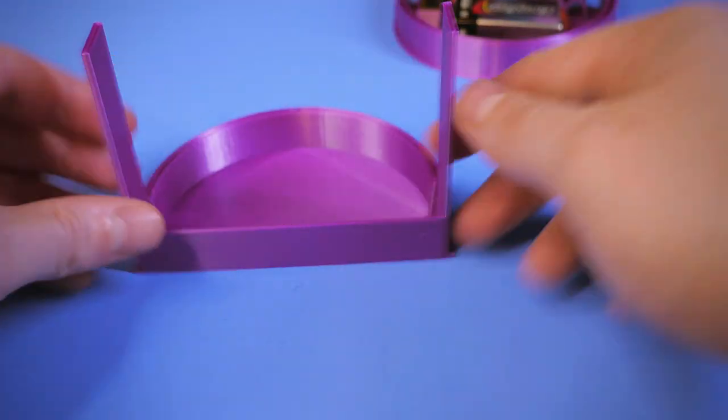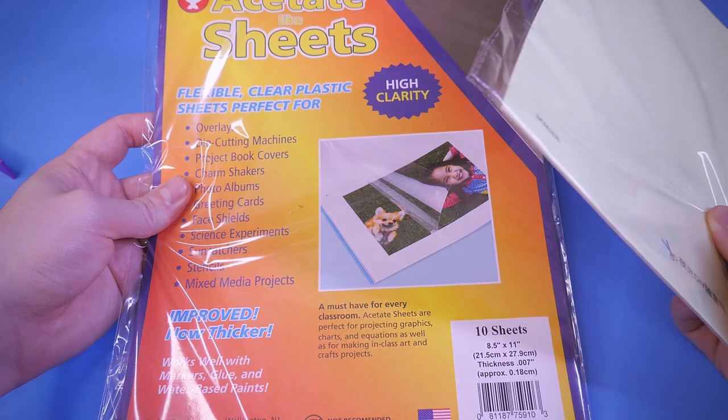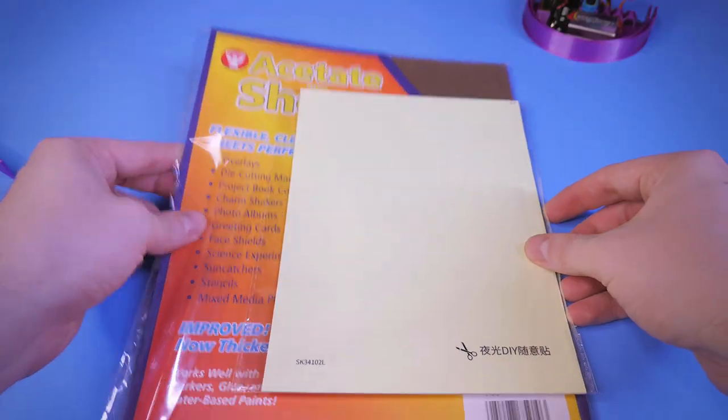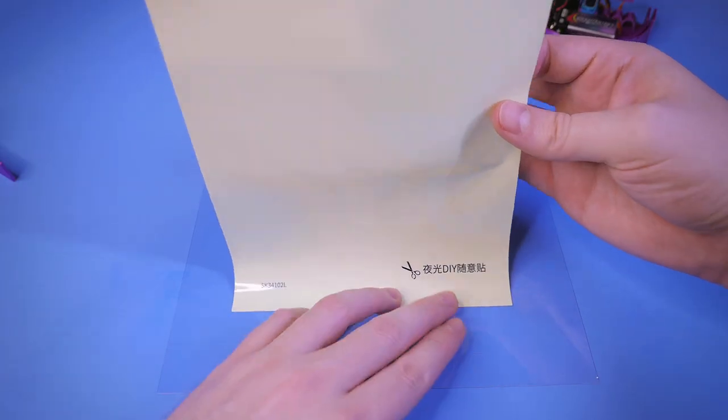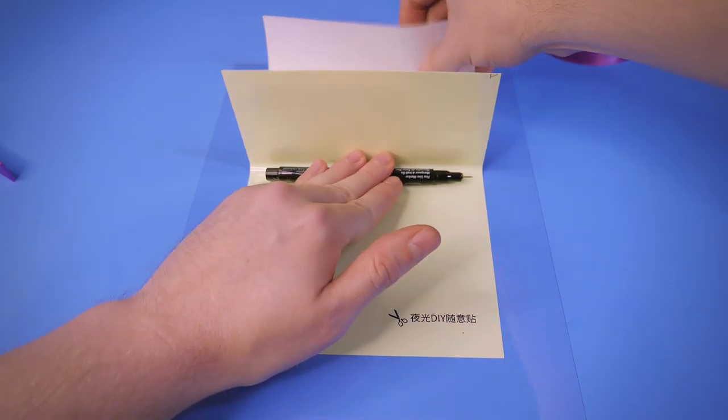And now for the top half. The glow-in-the-dark sheets are basically a large sticker, so I'll stick them to the back of this clear plastic sheet. Careful not to create any air bubbles.